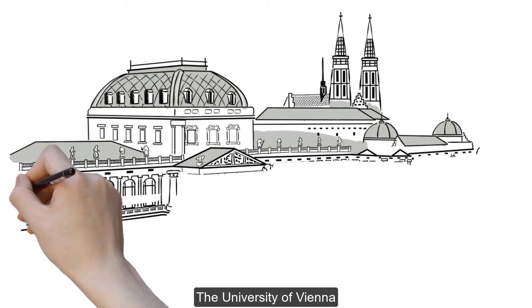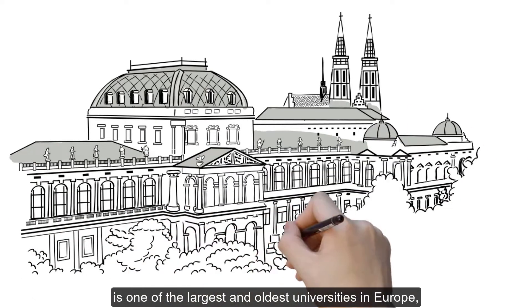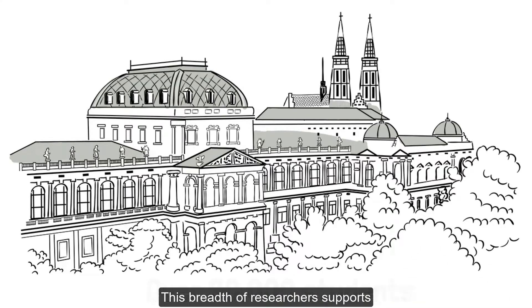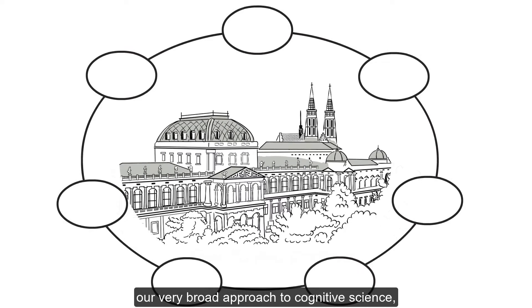The University of Vienna is one of the largest and oldest universities in Europe, with over 90,000 students and faculty in all disciplines. This breadth of researchers supports our very broad approach to cognitive science.